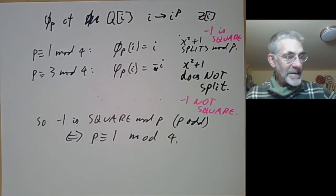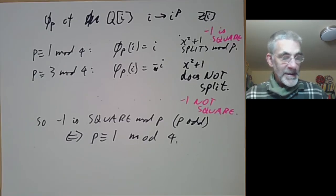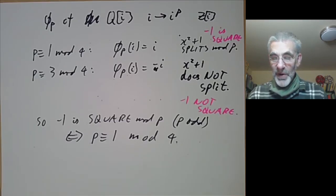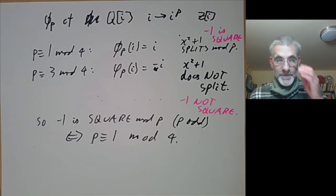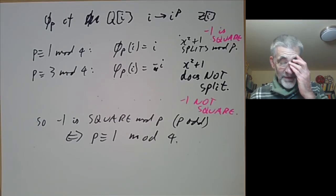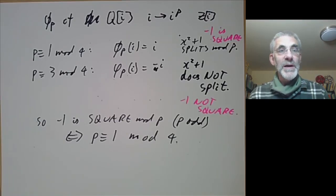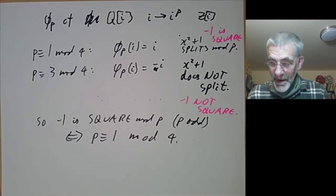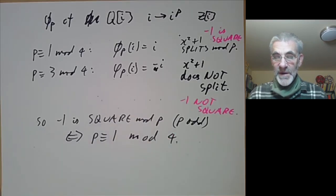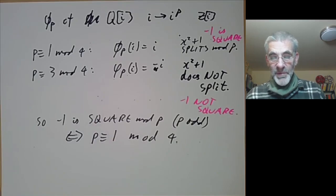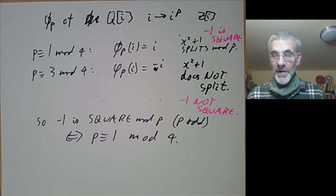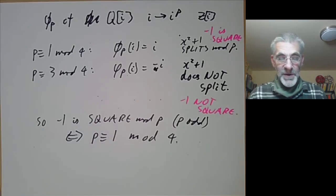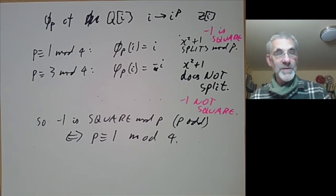Next lecture we're going to be looking at cyclotomic polynomials, which have roots that are roots of unity, and we're going to be using the Frobenius automorphism in order to prove that the cyclotomic polynomials are irreducible over the rationals.